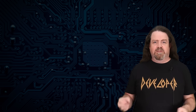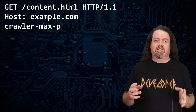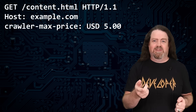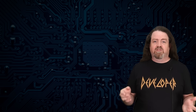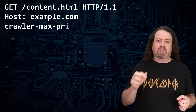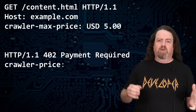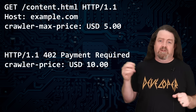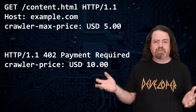Alternatively, there's proactive negotiation, where the crawler says: hey, I'll give you five bucks for that web page. And Cloudflare says: yeah, sure. Or if you've told your site that that page costs 10 bucks, the crawler gets an HTTP 402 Payment Required, and they're free to make a better offer or go crawl somewhere else.